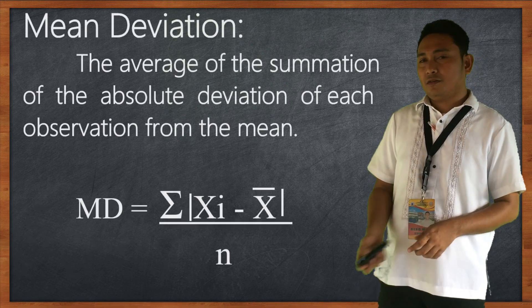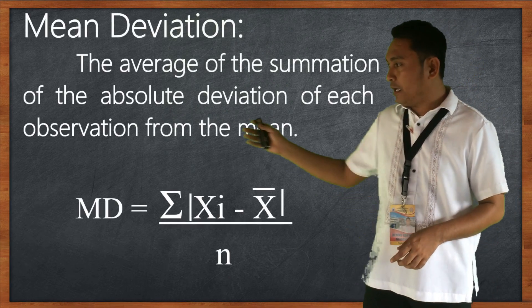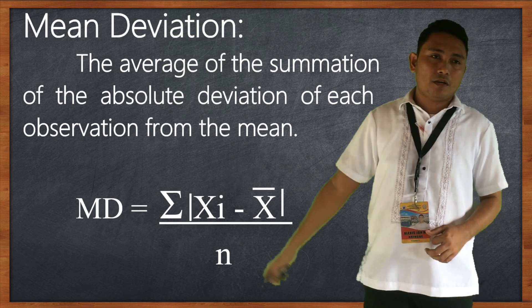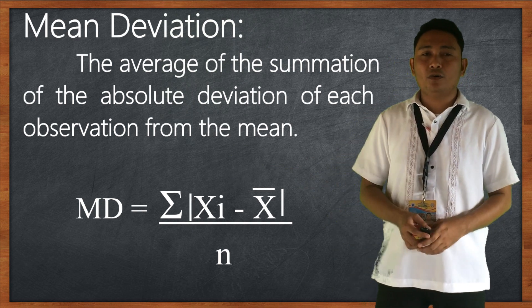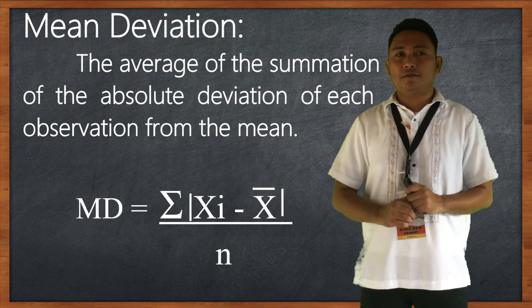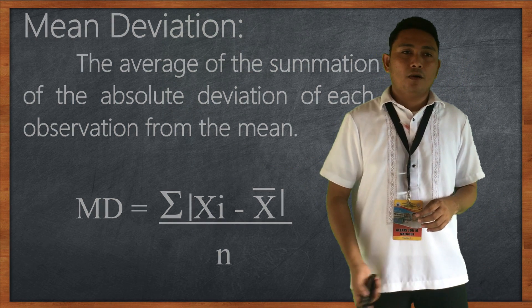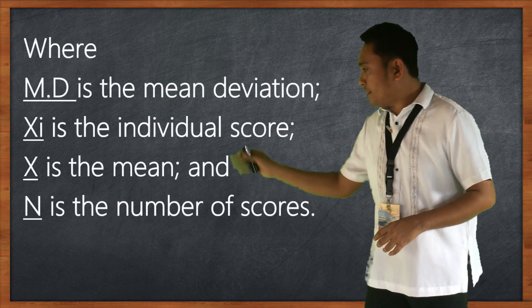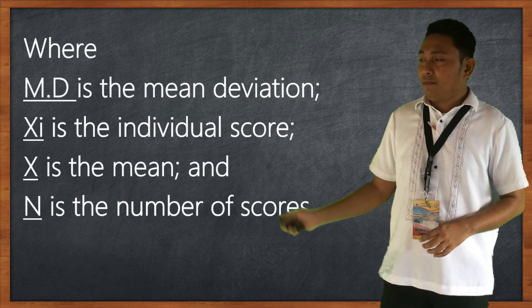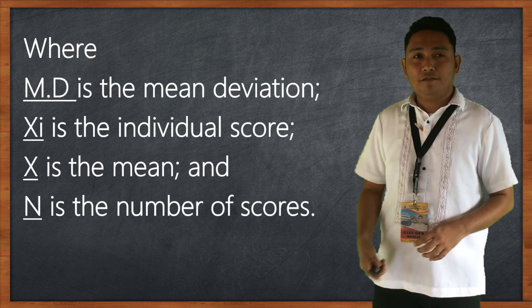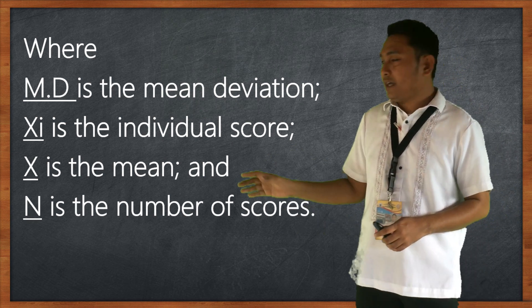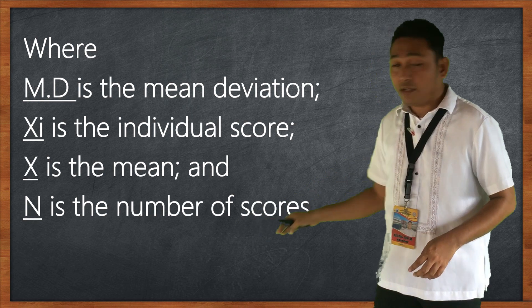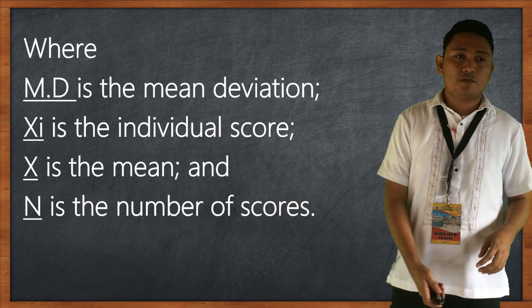Next is mean deviation — the average of the summation of the absolute value of each observation from the mean. The formula is: MD equals the summation of the absolute value of (x minus x-bar), divided by n. Where MD is the mean deviation, x is the individual score, x-bar is the mean, and n is the total number of scores.